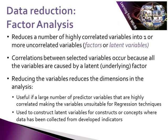Another type of data reduction analysis is what we call factor analysis. Factor analysis reduces a number of highly correlated variables into one or more uncorrelated variables, or what we call factors or latent variables. Correlations between selected variables occur because all the variables are caused by a latent or underlying factor — the correlation between variables is not a causal relationship; the causal relationship is between the factor and the variable.